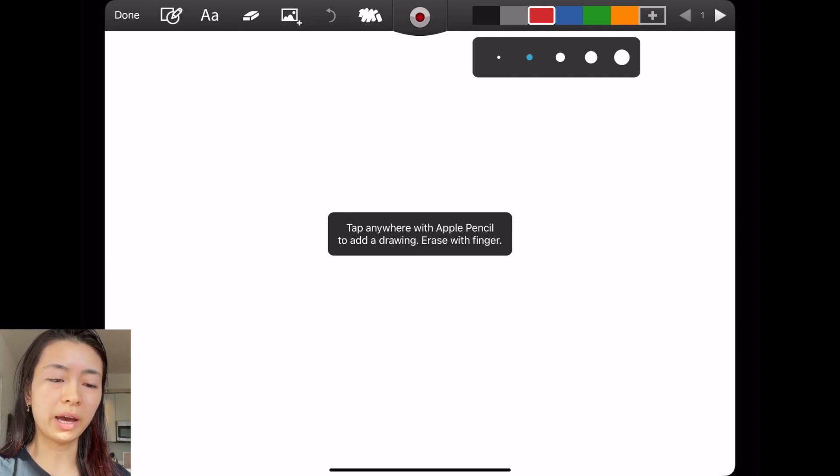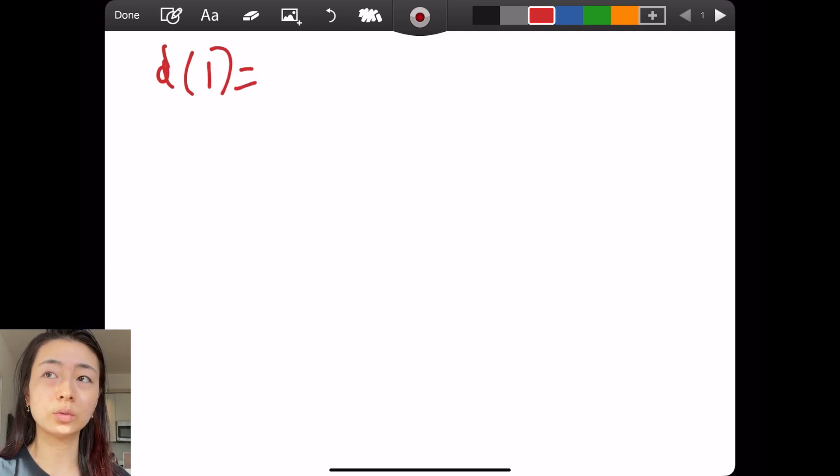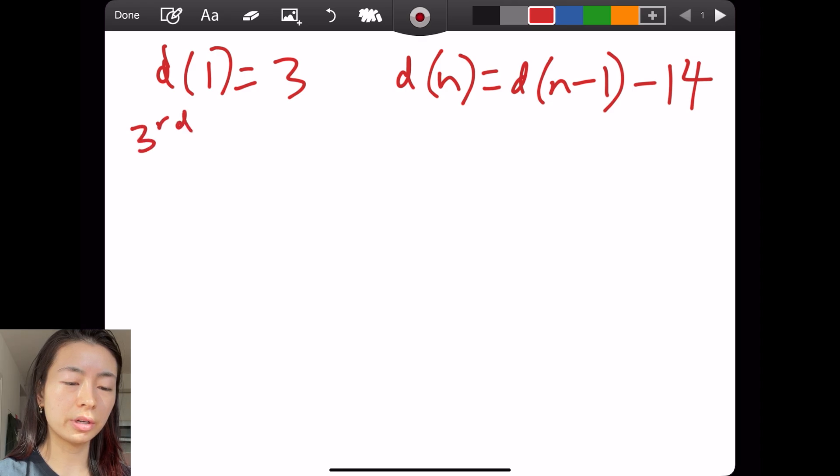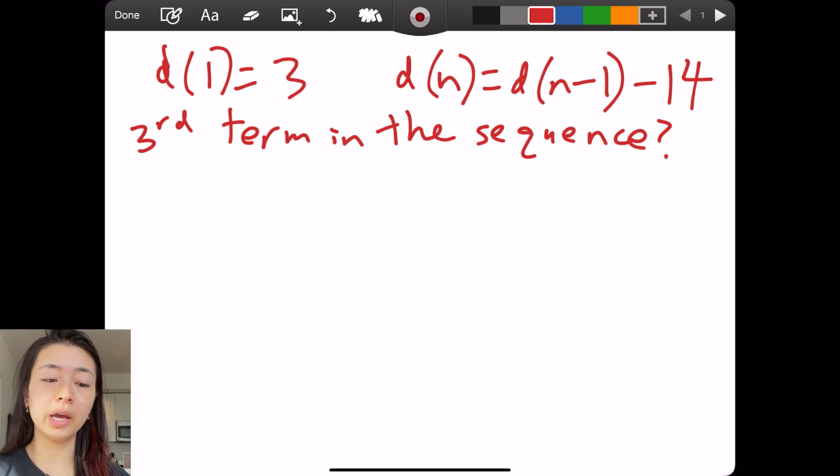So the problem is about sequences. We have D(1) equals 3 and D(n) equals D(n-1) minus 14. So this is the given information and the question is, what is the third term in the sequence? Every time I ask a question, you should definitely pause the video and try to answer it yourself because that is the key part of stretching your brain such that you can figure out the answer yourself. You're not going to have a tutor on the test with you.